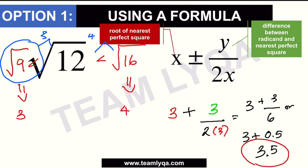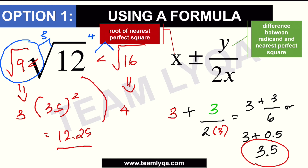If I want to check, I can solve 3.5 squared, or 3.5 times 3.5, which gives me 12.25. That's fairly reasonable and close to 12, but if I want something more exact, there is another thing I could do.